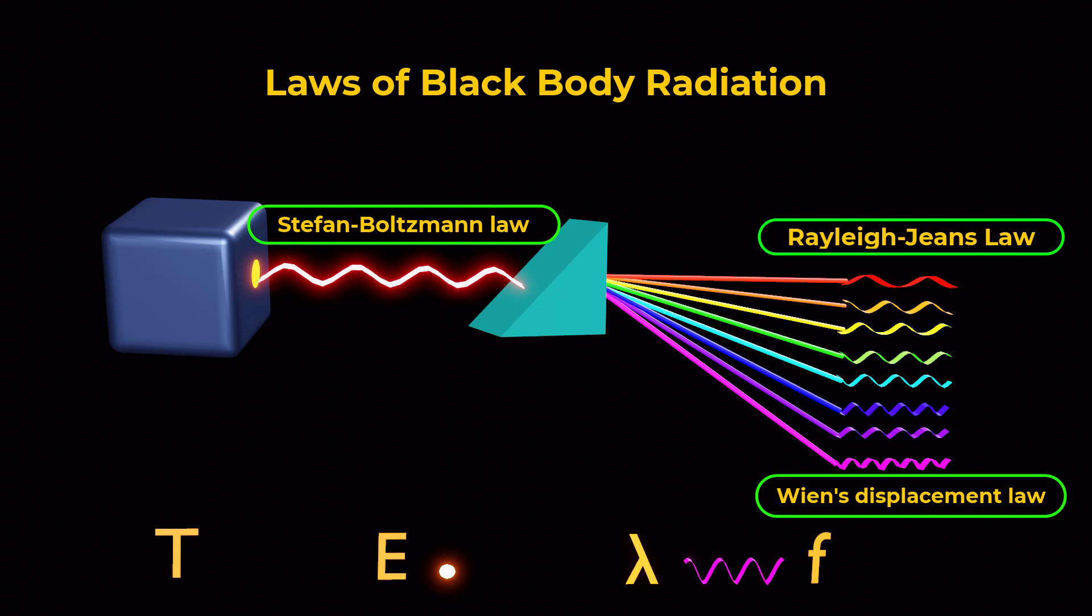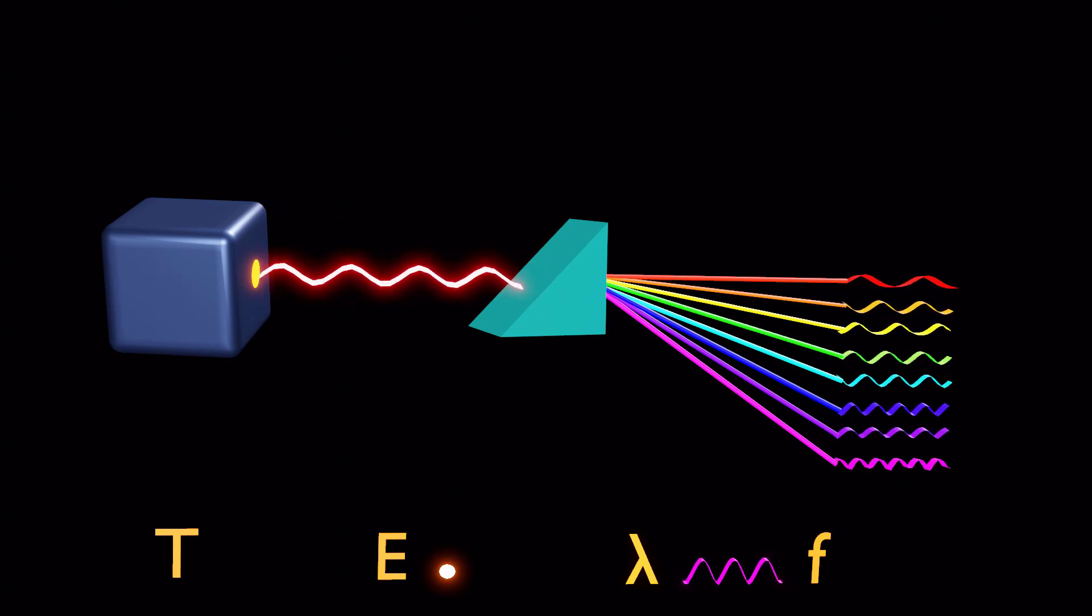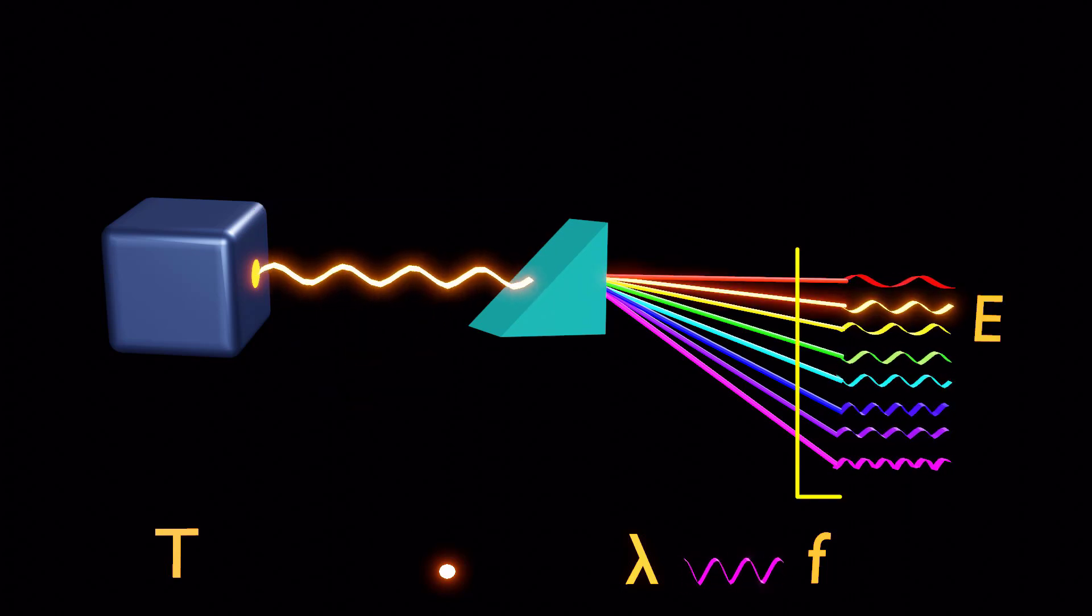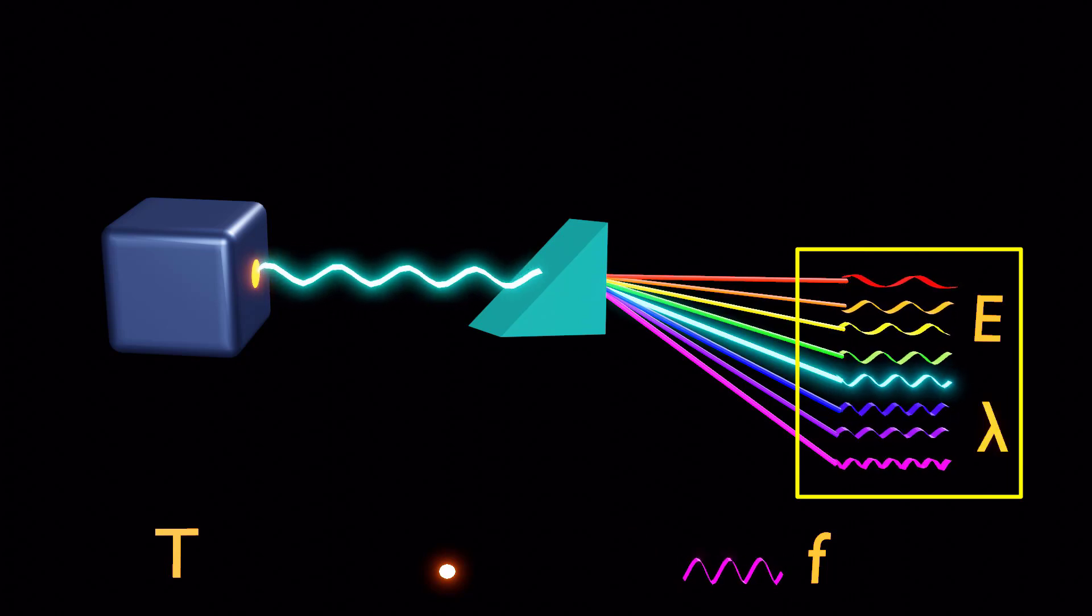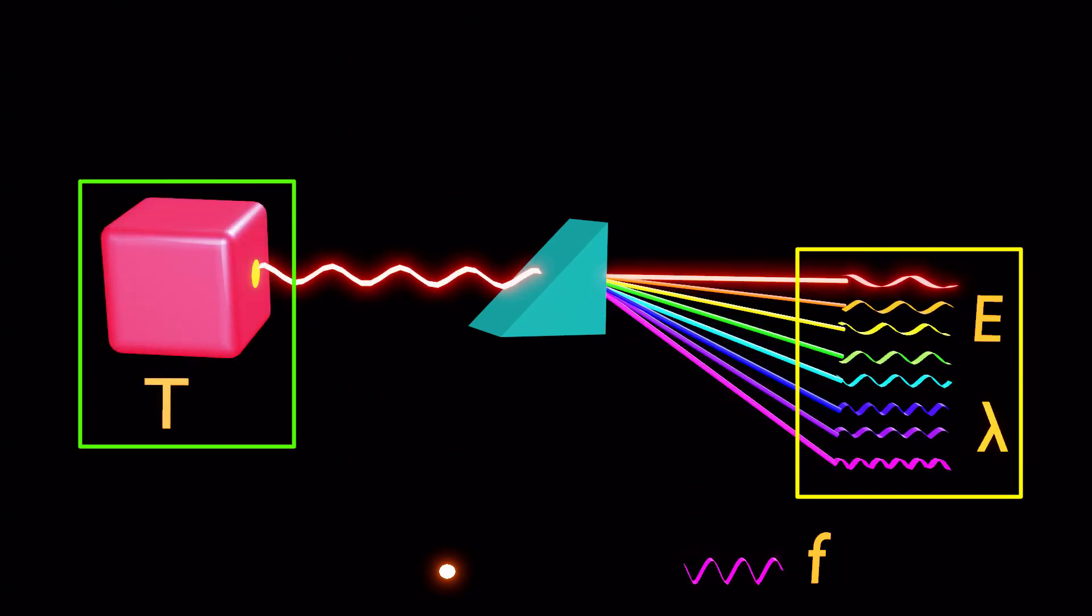These laws offer a deep understanding of the total energy emitted and the distribution of energy across all wavelengths and temperatures emitted by a black body.